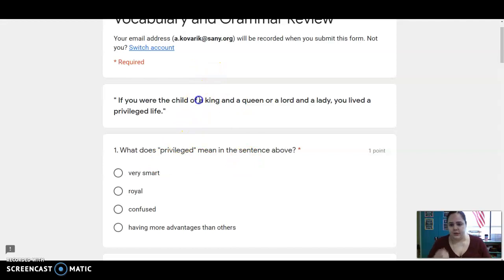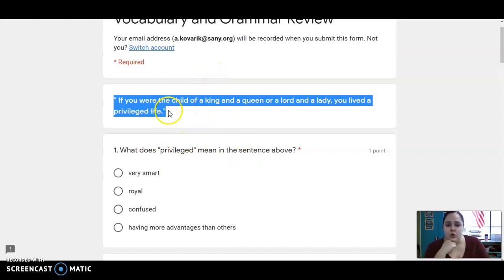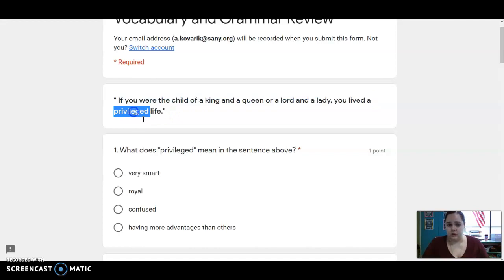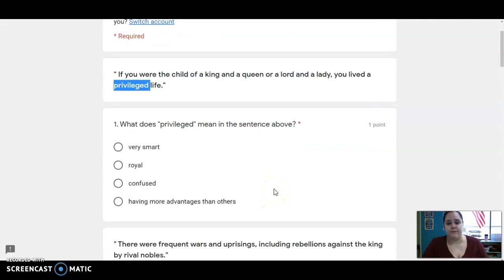So the first one uses this quote here: If you were the child of a king and a queen or a lord and a lady, you lived a privileged life. What does privileged mean in the sentence above?